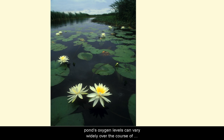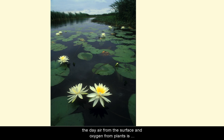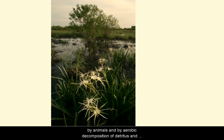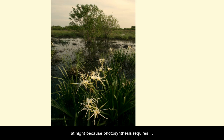A pond's oxygen levels can vary widely over the course of the day. During the day, air from the surface and oxygen from plants is constantly replenishing the dissolved oxygen that's consumed by animals and by aerobic decomposition of detritus and other decaying matter in the water and along the surface of the pond's bottom.